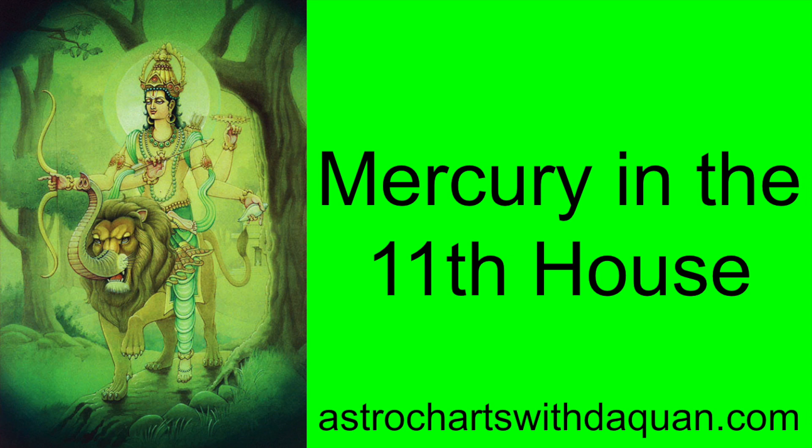You want to understand if there are any planets conjunct with Mercury, as Mercury will adapt to those planets. Also check if Mercury is being influenced by any planets aspecting onto Mercury. You want to understand which houses in your chart are ruled over by Gemini and Virgo, and if your ascendant lord is compatible with Mercury.